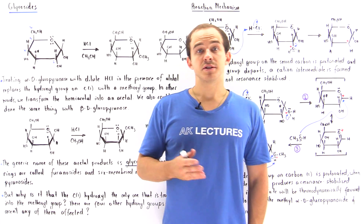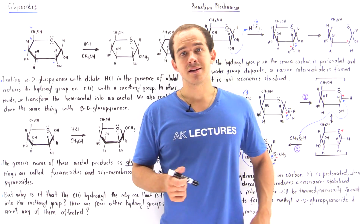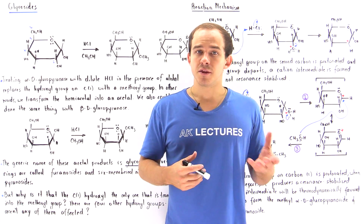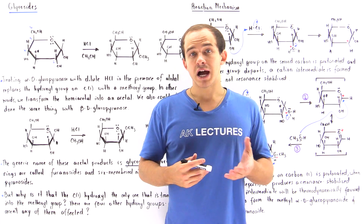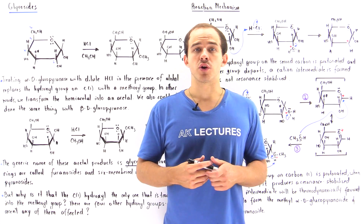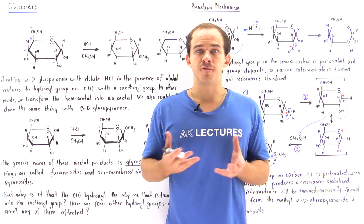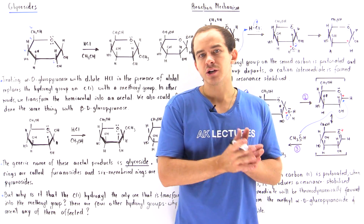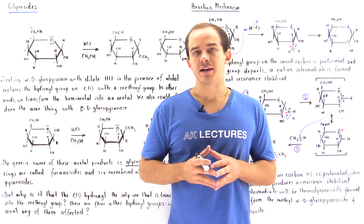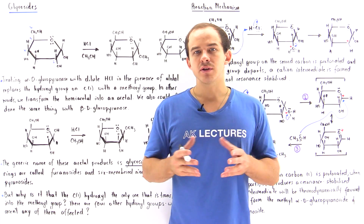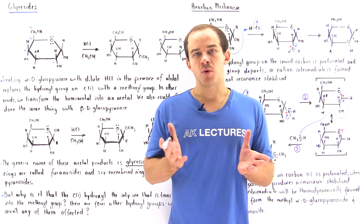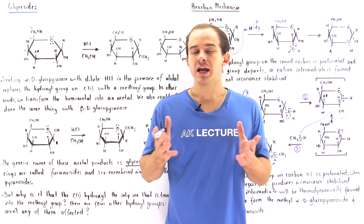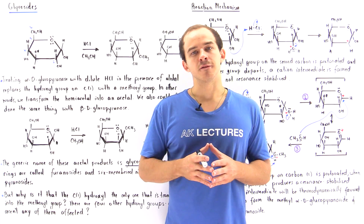Sugar molecules in their cyclic hemiacetal form can undergo a reaction in the presence of dilute hydrochloric acid and alcohol to form an acetal product known as a glycoside. As our example, let's suppose we take the glucose molecule in its cyclic hemiacetal form.